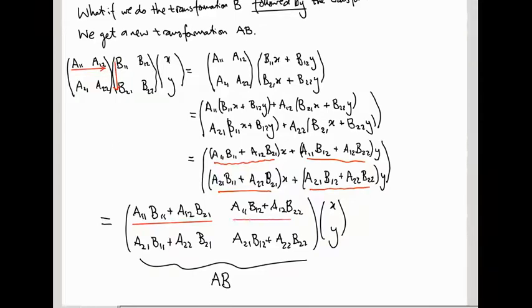Similarly, this guy, this second expression here, is this first row, A₁₁, A₁₂, multiplied into the second column of B. So, it's A₁₁B₁₂, like this, plus A₁₂B₂₂, which is this second term here.